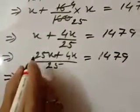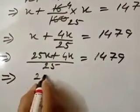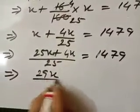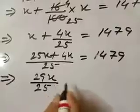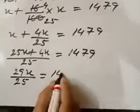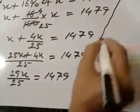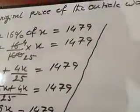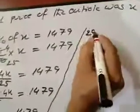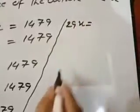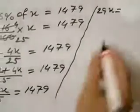Or 25X plus 4X, 29X by 25 is equal to 1479. Now cross multiplication you do, 29X is equal to 1479 into 25.